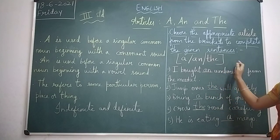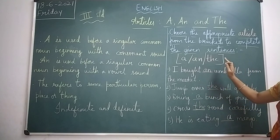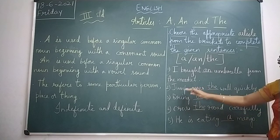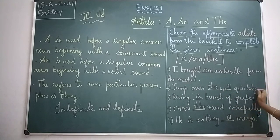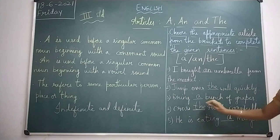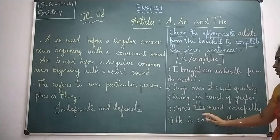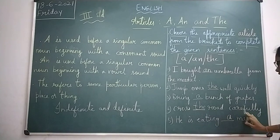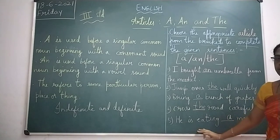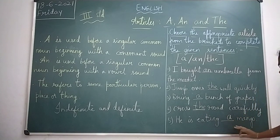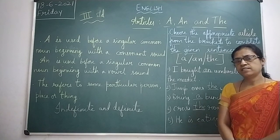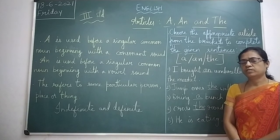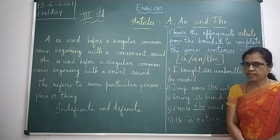Let us review: we had to choose the correct article from the bracket and fill it in. The answers are: an umbrella, jump over the wall quickly, bring a bunch of grapes, cross the road carefully, he is eating a mango. I hope you have understood, children. In the next class let us discuss one more topic. Thank you.